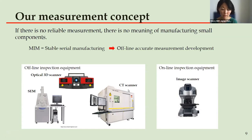Next is the CT scanner. This is a measurement X-ray CT. It efficiently measures internal and external geometry without reference measurements. The smallest spot size is 3 microns.